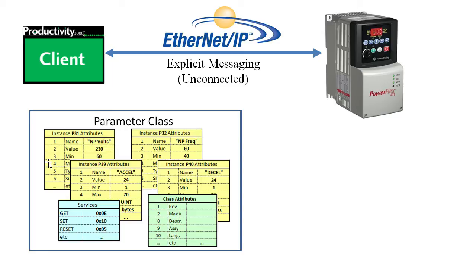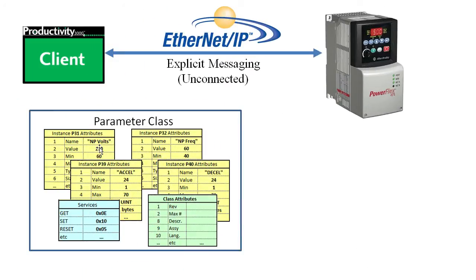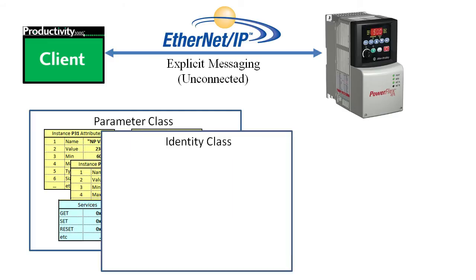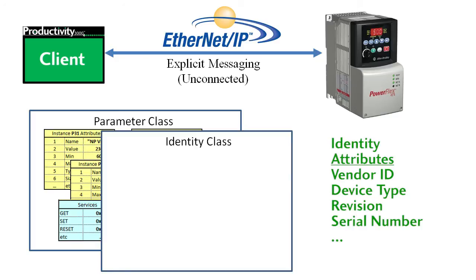That's huge and it makes you much more productive. Each class has its own set of predefined tables, but you access each one the same way. For example, let's look at the Identity class. This is used to identify different components in a device. In our device we have the host drive itself and the Ethernet adapter, and you might even have another communications adapter module connected to the drive.